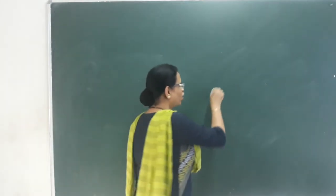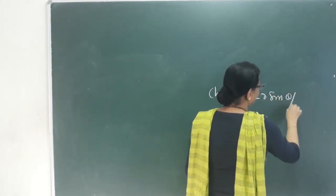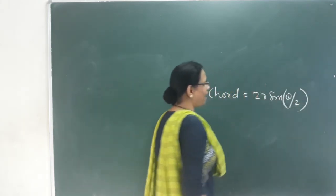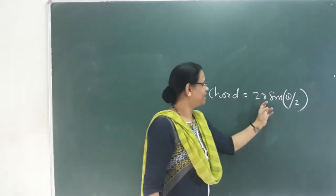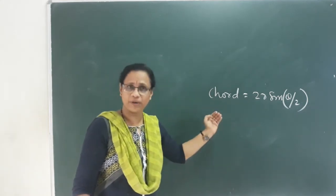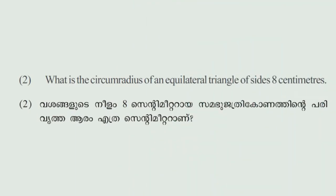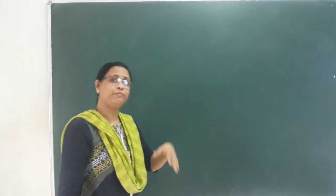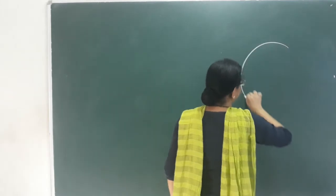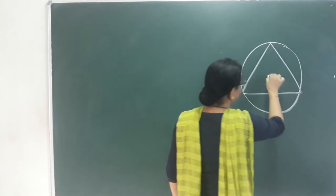The length of the chord is double the product of the radius and the sine of half the central angle. Practice problem on page 114: What is the circumradius of an equilateral triangle of side 8 centimeters? The circumscribed circle inscribes the equilateral triangle.